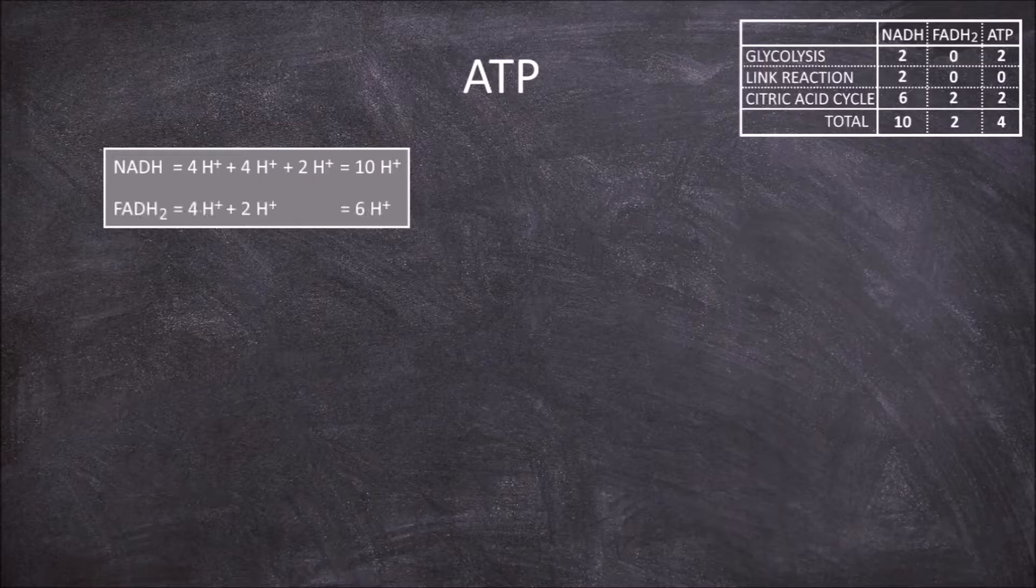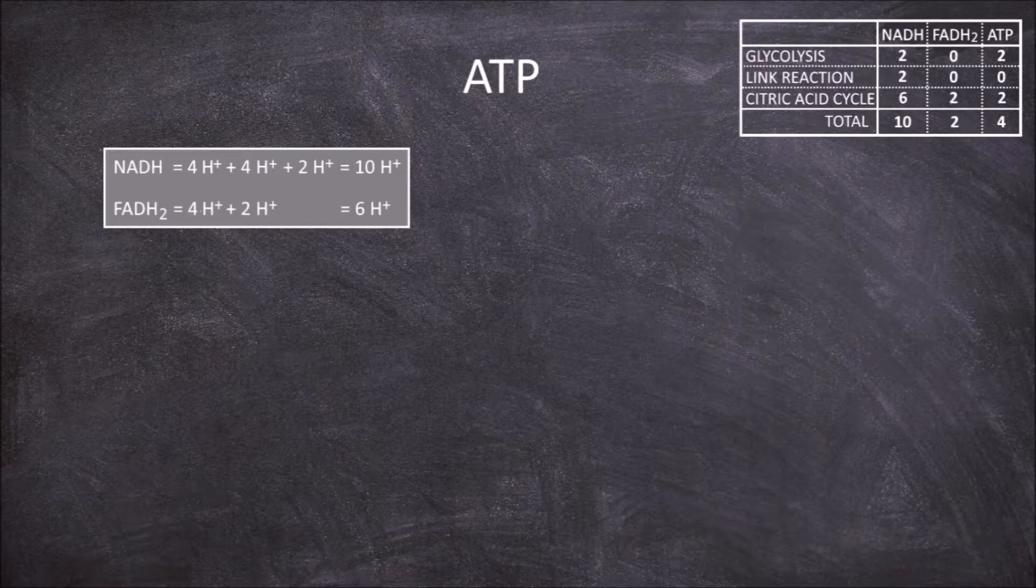For each FADH2 that goes into the electron transport chain passing on its 2 electrons, 4 hydrogen are pumped through at complex 3 and 2 hydrogen at complex 4.